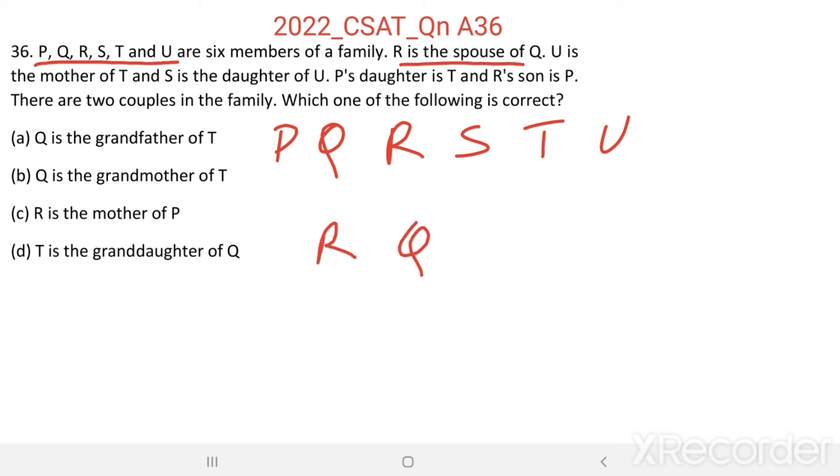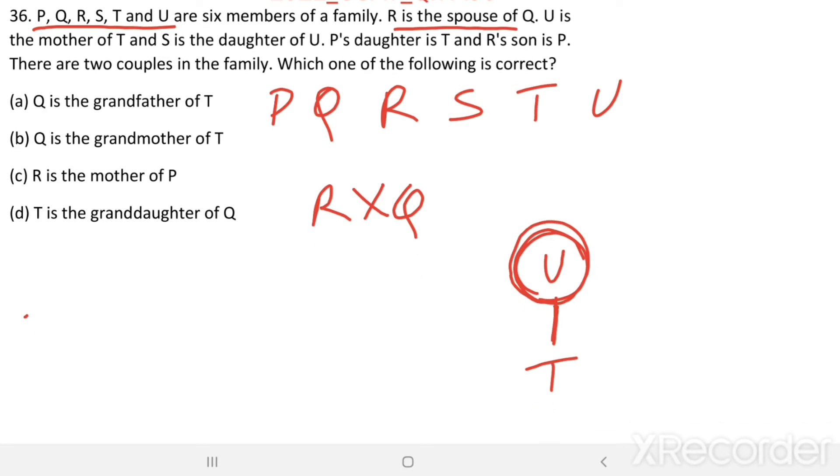I am representing spouse with a Hindu mark. U is the mother of T. Relationship between two generations and representing with a vertical line and female member in a circle. Here, U is mother of T. S is the daughter of U.